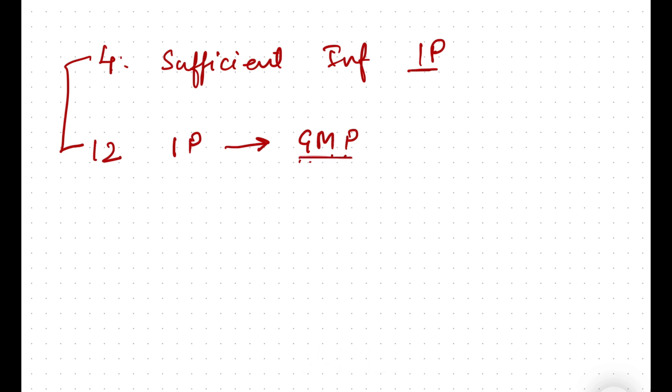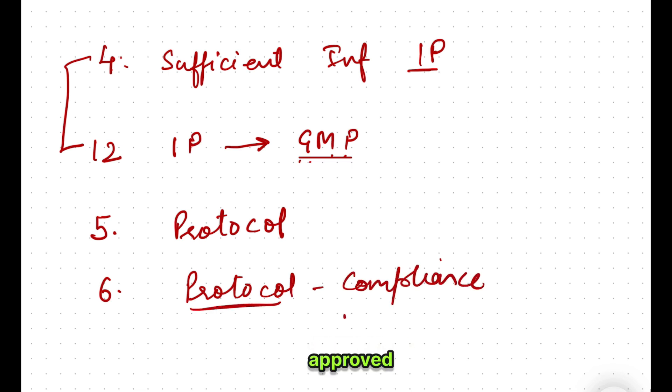Now coming to the fifth principle: it's about protocol, that it should be scientifically sound. You'll be glad to know that the sixth principle is also related to protocol - that the trial should be conducted in compliance with the protocol, which is approved by IRB or IEC, institutional review board and/or institutional ethics committee. So the fifth and sixth principles, they are totally dedicated to protocol.